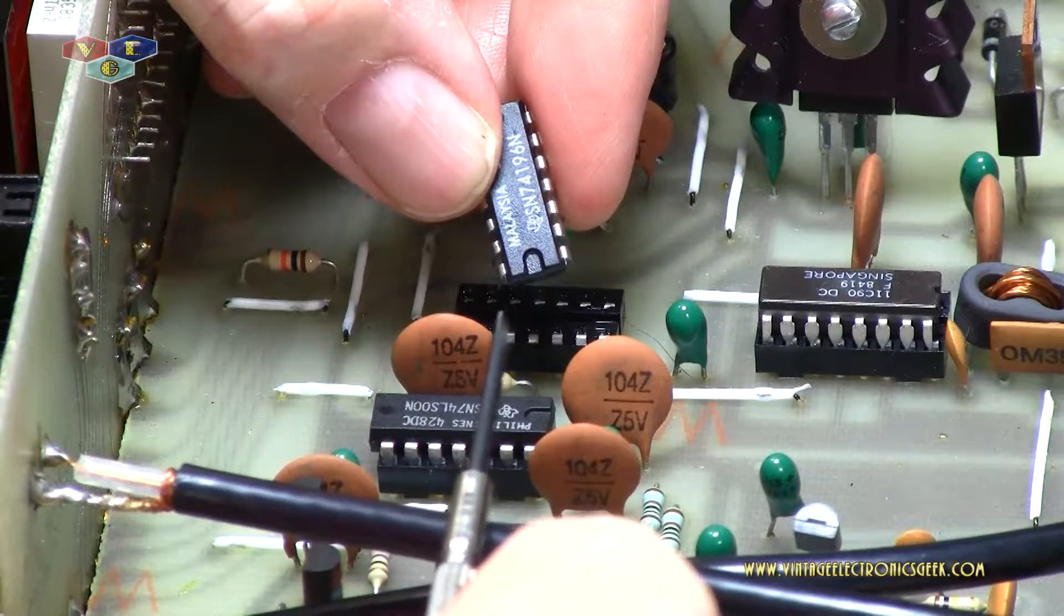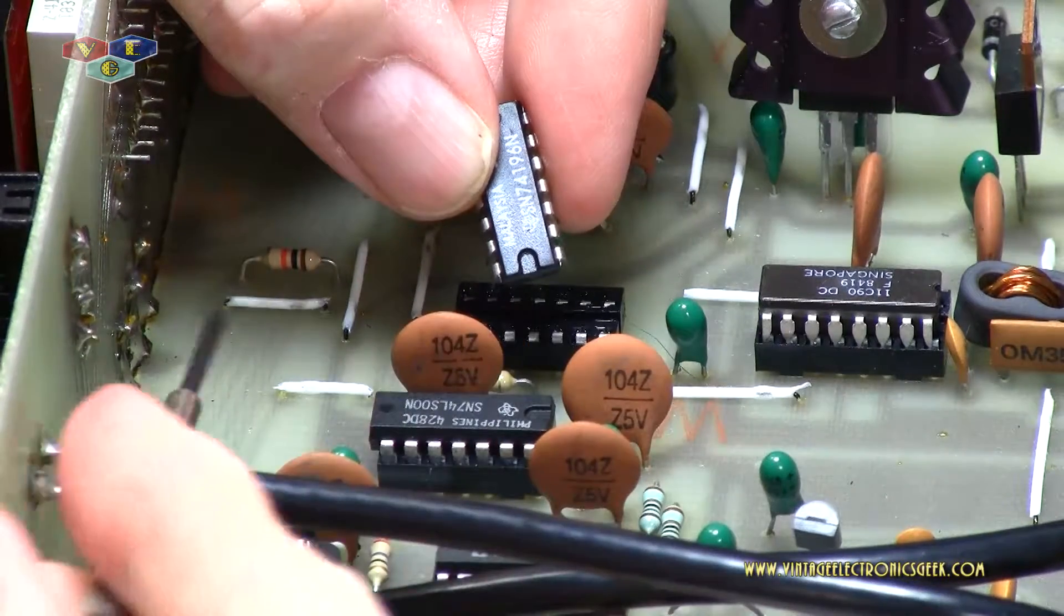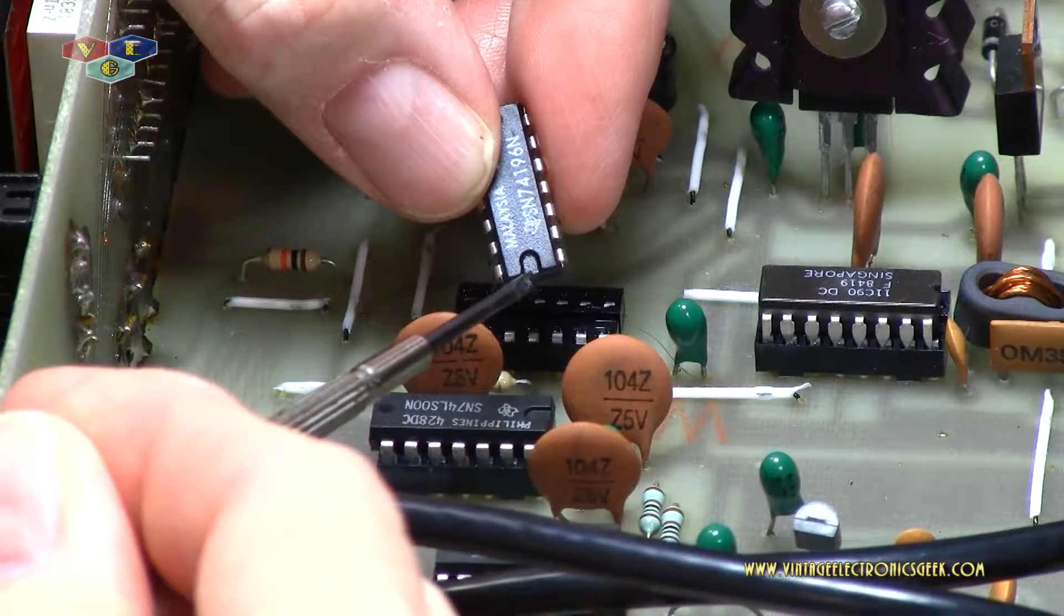Now, if you notice on the backside of this IC chip, we have this little notch right here. On the backside, we have this little dot.